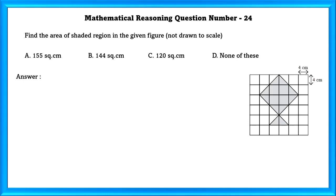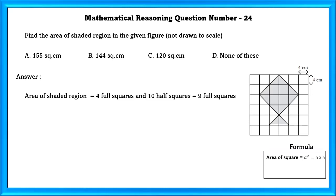Mathematical reasoning question number 24: Find the area of the shaded region in the given figure — not drawn to scale. The area of the shaded region equals 4 full squares and 10 half squares, which equals 9 full squares. Area of shaded region equals 9 into 4 into 4, which equals 144 square centimetres.